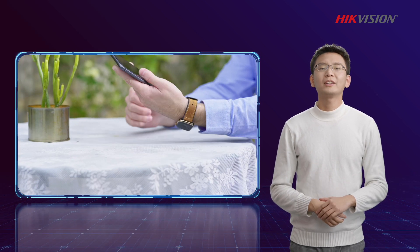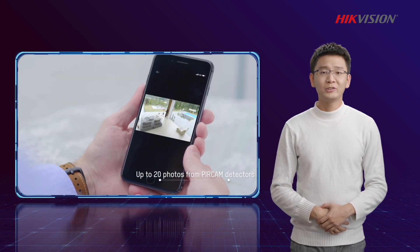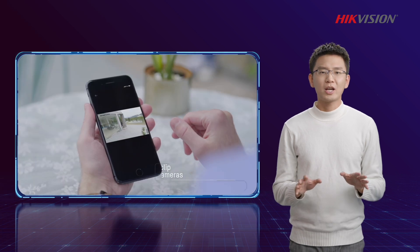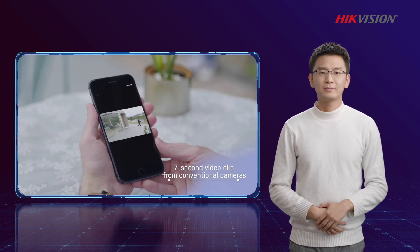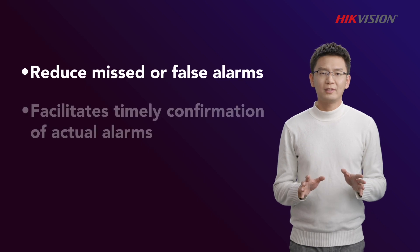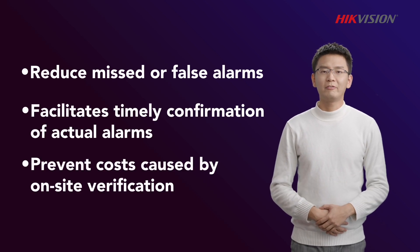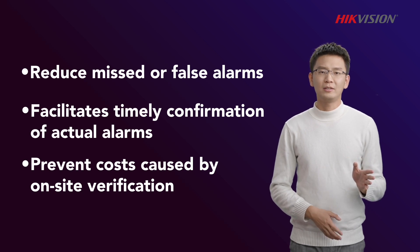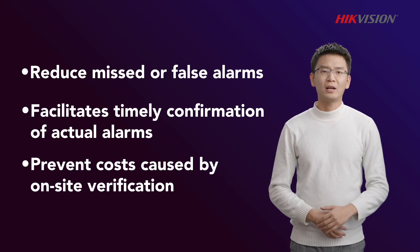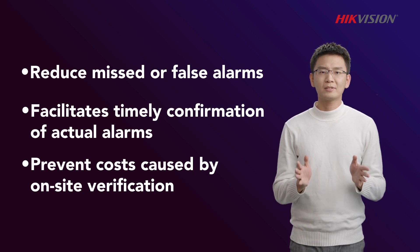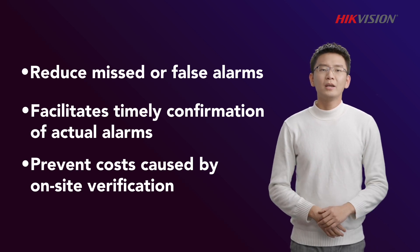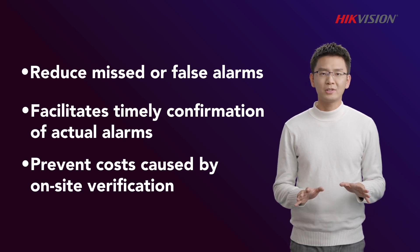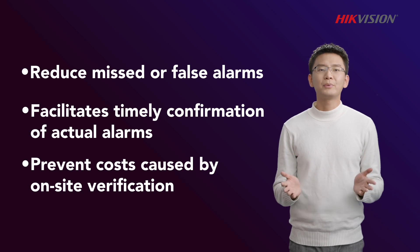Another useful tip for reducing false alarms is effective video and photo verification. By checking video clips or images of the scene after an alarm notification on Tom's mobile phone, he can effectively check real-time on-site conditions at his cafe. This not only vastly reduces the probability of missed or false alarms — it facilitates timely confirmation in the event of an actual alarm and prevents costs caused by on-site verification. It also guarantees that Tom enjoys undisturbed security control services. Finally, some peace and quiet.